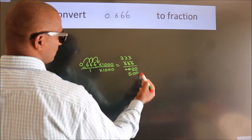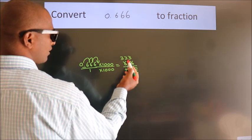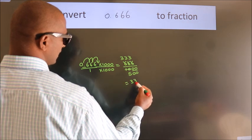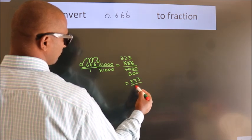These zeros as it is down. Further cannot be simplified. So our fraction is 333 by 500.